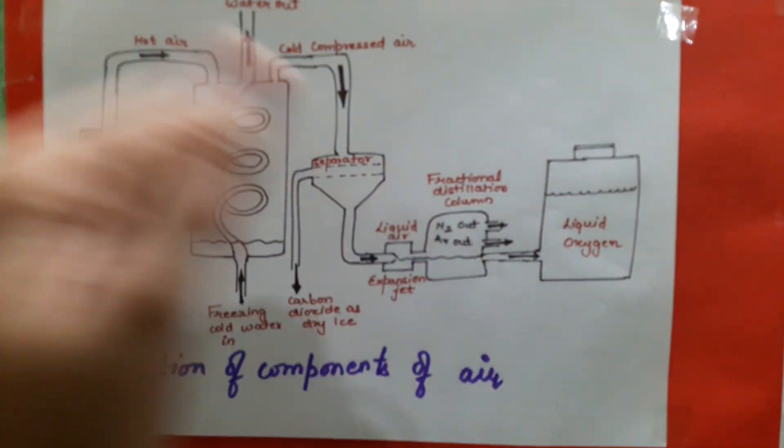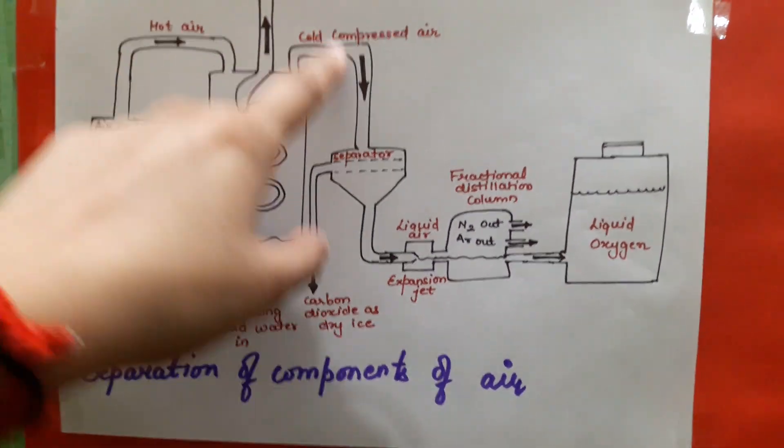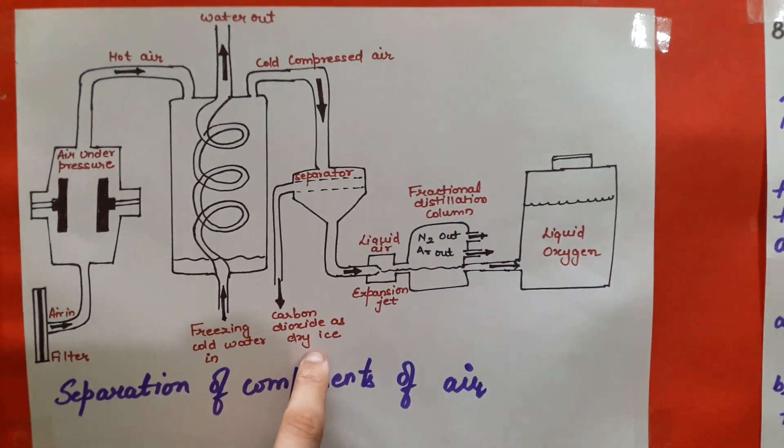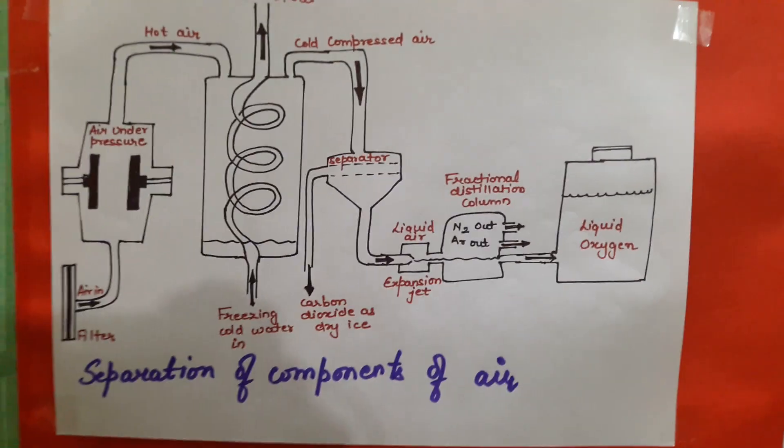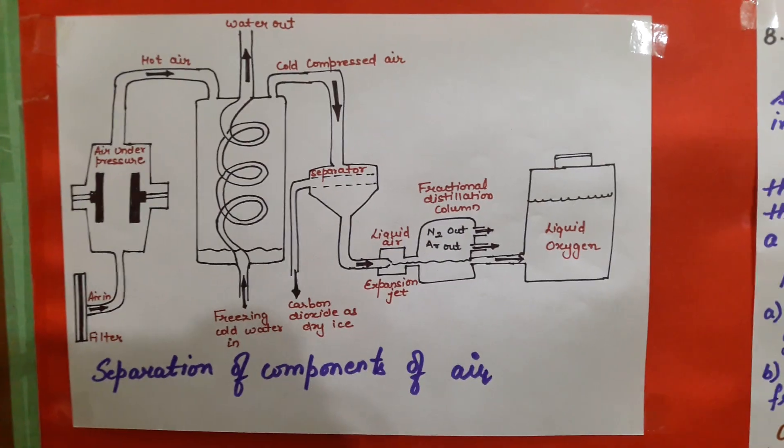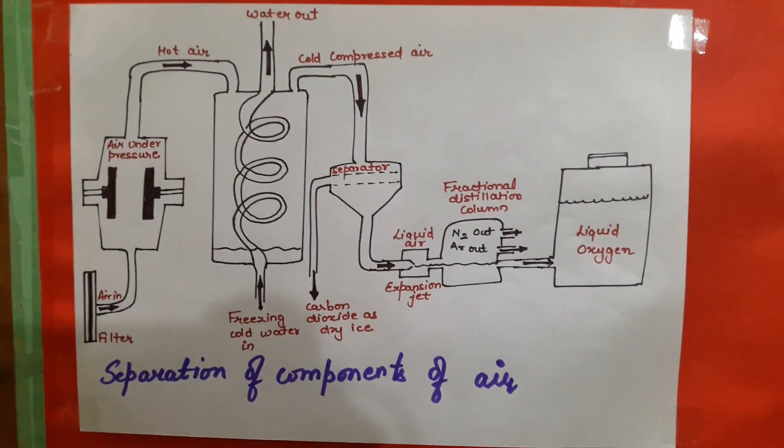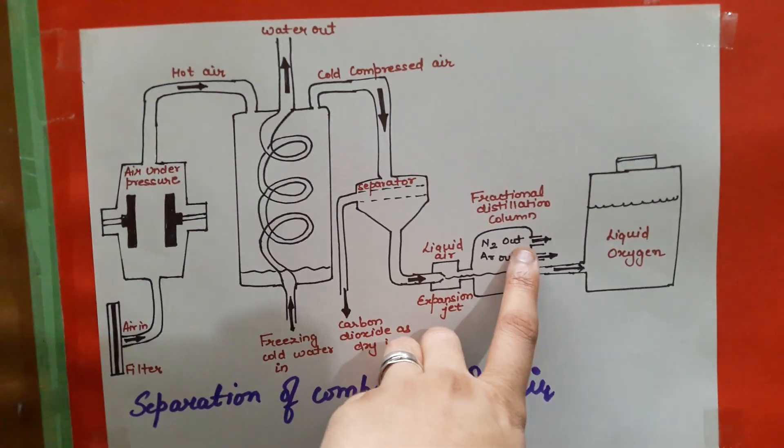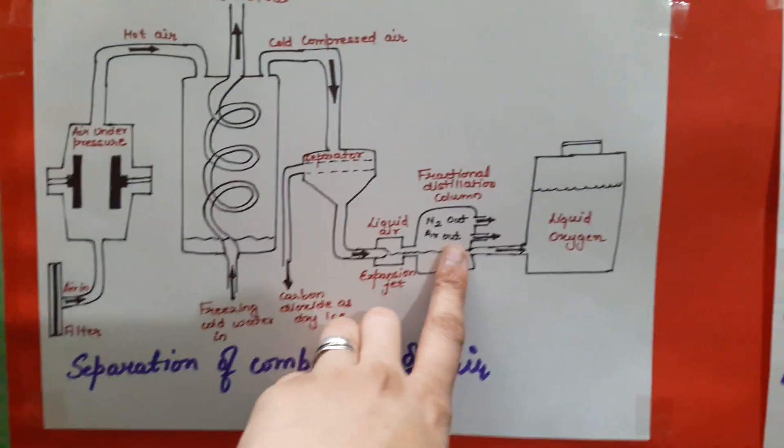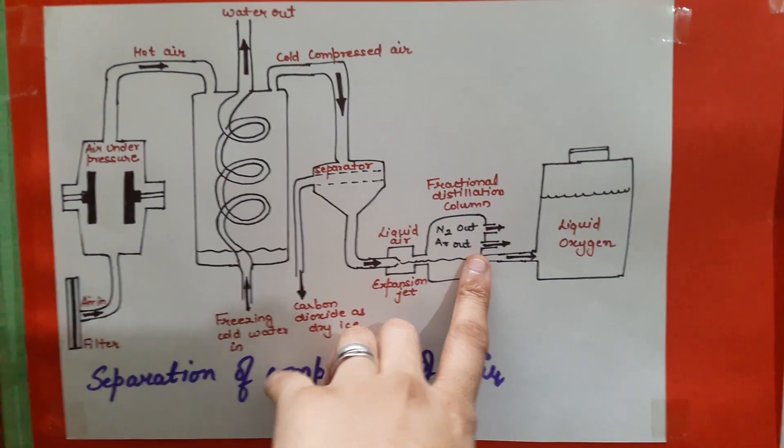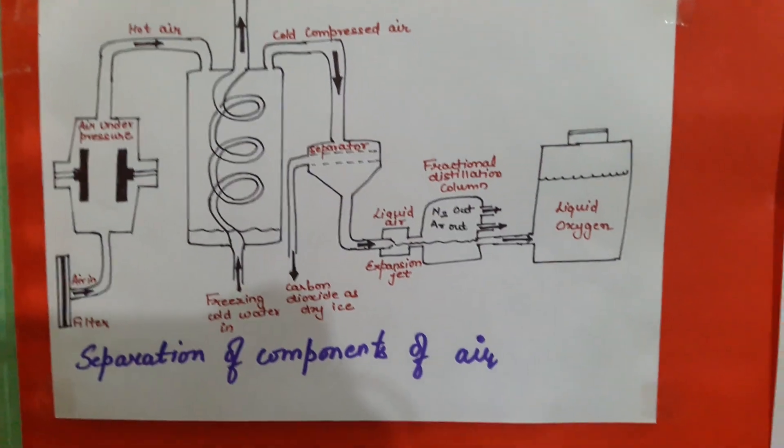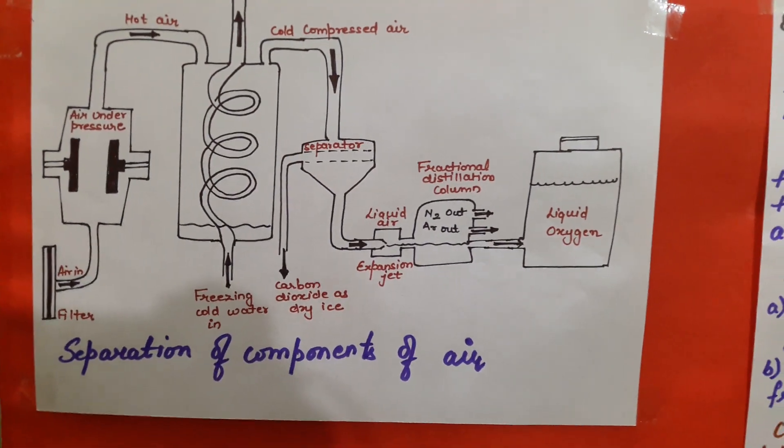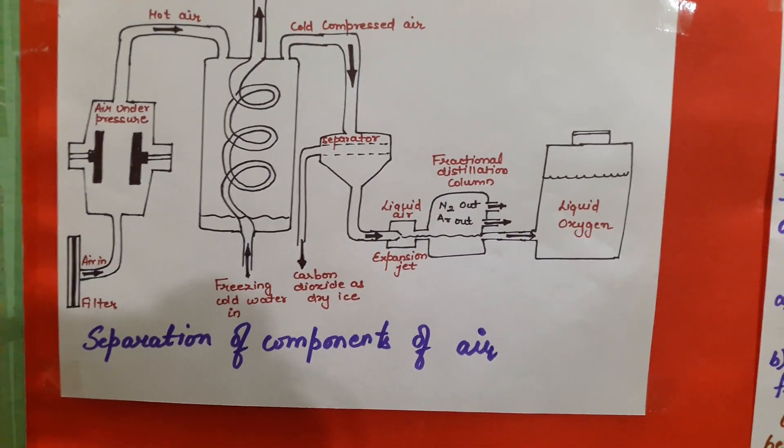Cold compressed air moves into the next compartment, the separator. The first gas separated is carbon dioxide, which is in solid form, dry ice. After that, the liquid air goes into the expansion jet and then into the fractional distillation column where nitrogen gas is separated, then argon. The leftover gas is oxygen. So this is the process by which we can separate different gases from air.